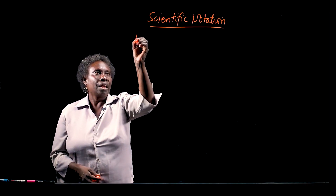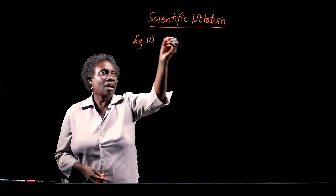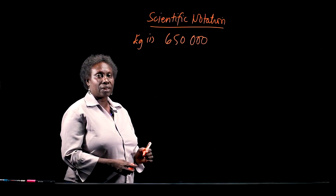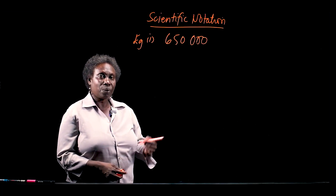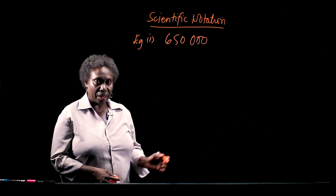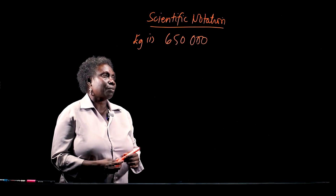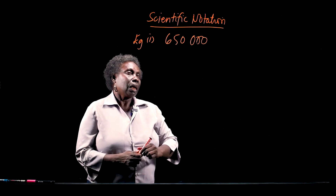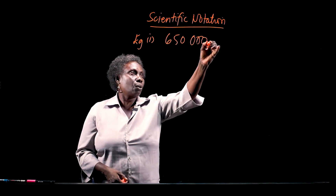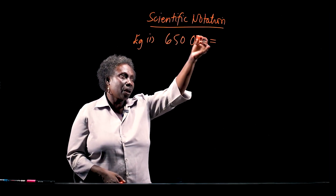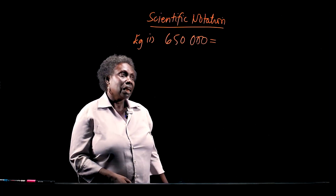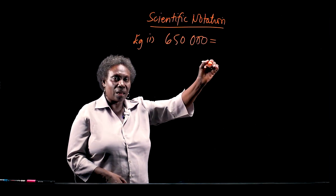Example number 1: I have 650,000. How do I write 650,000 in scientific notation? We said it must be a value between 1 and 10, multiplied by a power of 10. So when we look at 650,000, we can put the decimal point between the first and the second significant figure. We count the number of places we move to the right, because in whole numbers, we assume the decimal point is at the end of the last digit.